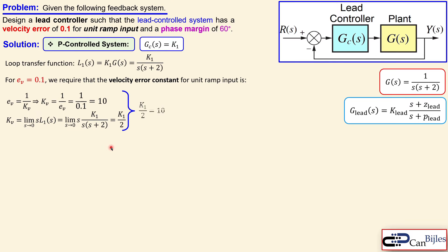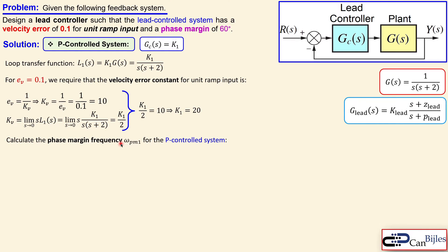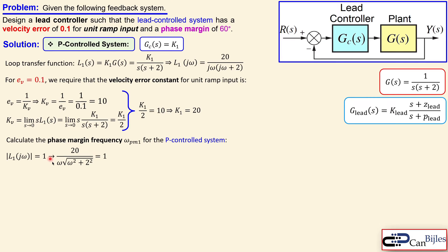Setting K1/2 = 10 gives K1 = 20. So the controller gain must be 20 to meet the velocity error specification. Now we check whether this also satisfies the 60-degree phase margin. We calculate the phase margin frequency ωpm1 by substituting jω into L1 with K1=20, setting the magnitude equal to 1, and solving — giving ωpm1 = 4.25 radians per second.